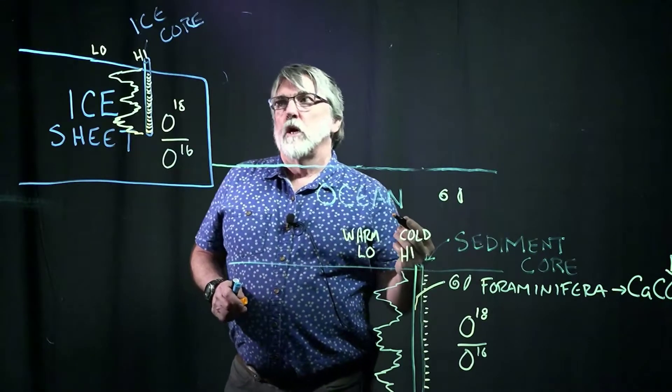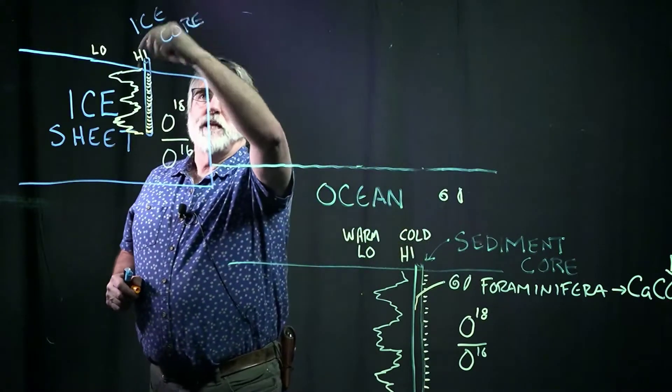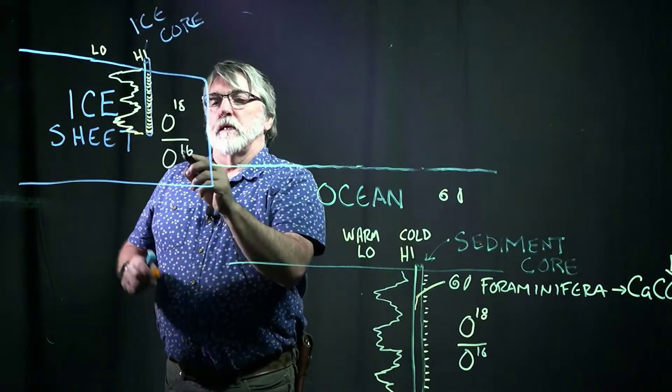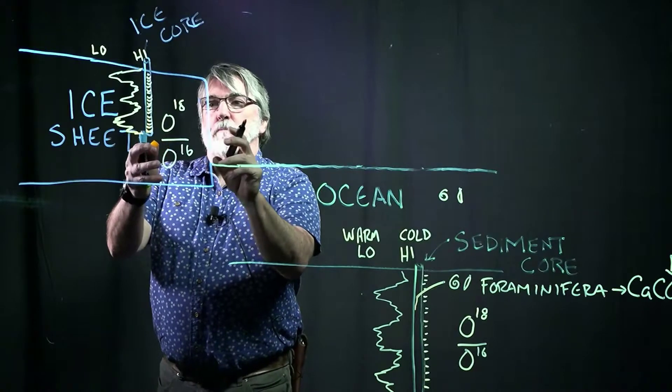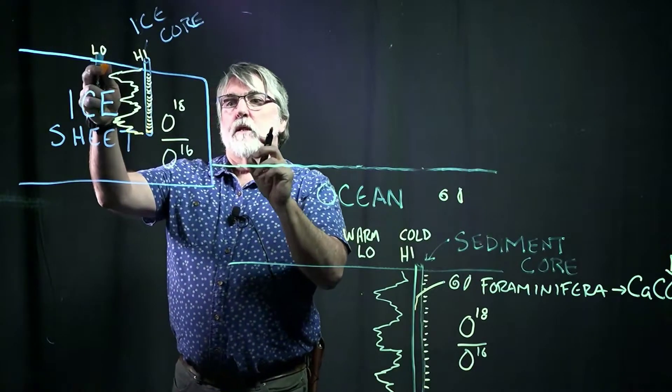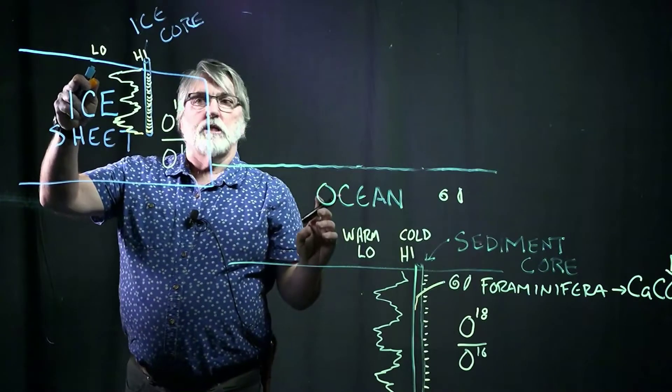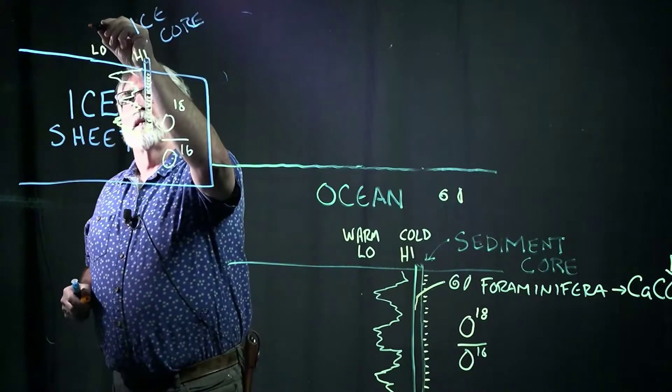But now remember in the ice what we're doing. We're taking, when things are growing, we're taking O16 and putting it in here. That means when this ratio is getting, when this O16 is getting bigger, this is getting lower. So we're taking it out of the oceans and putting it into the ice. That means this is cold.